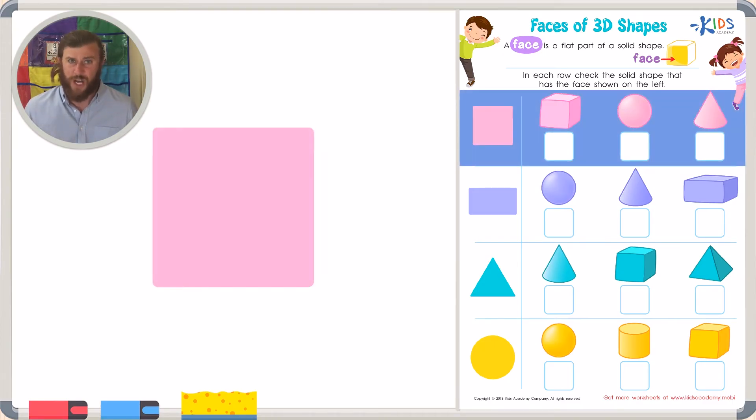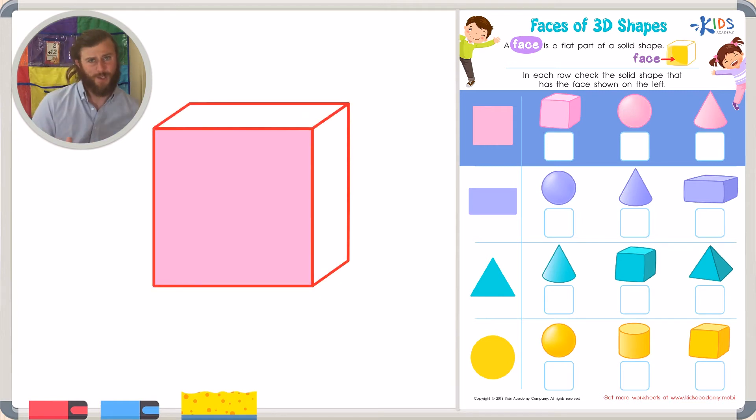Which one of these shapes does this square face belong to? If we look at our first shape, I see a cube. I'm starting to think this cube is the right shape because it has many square faces. I think that this square face belongs to this shape. Let's check out the other shapes just to be sure.